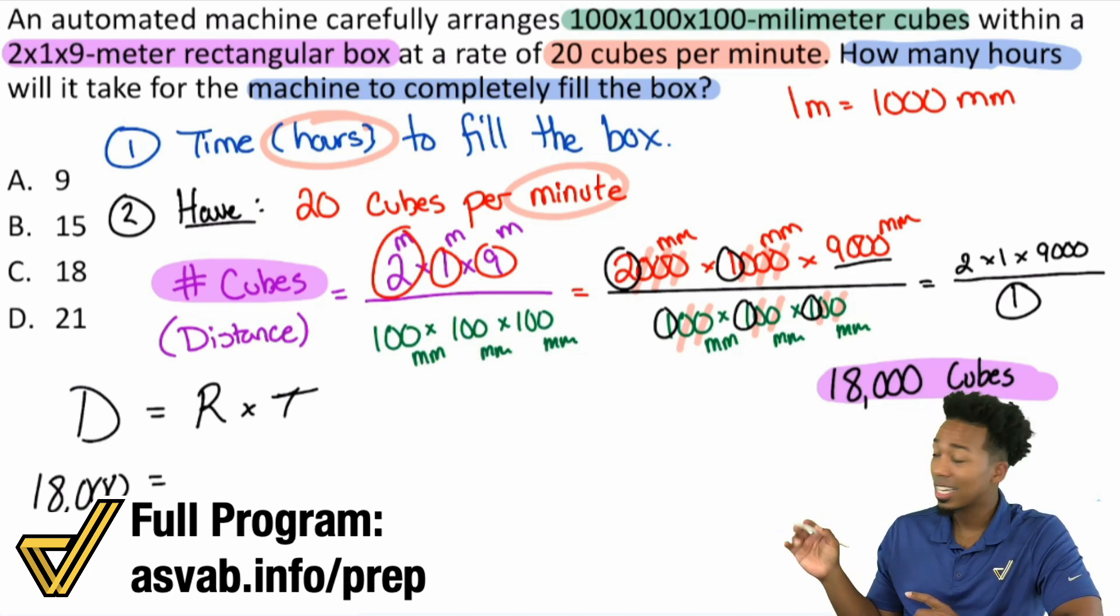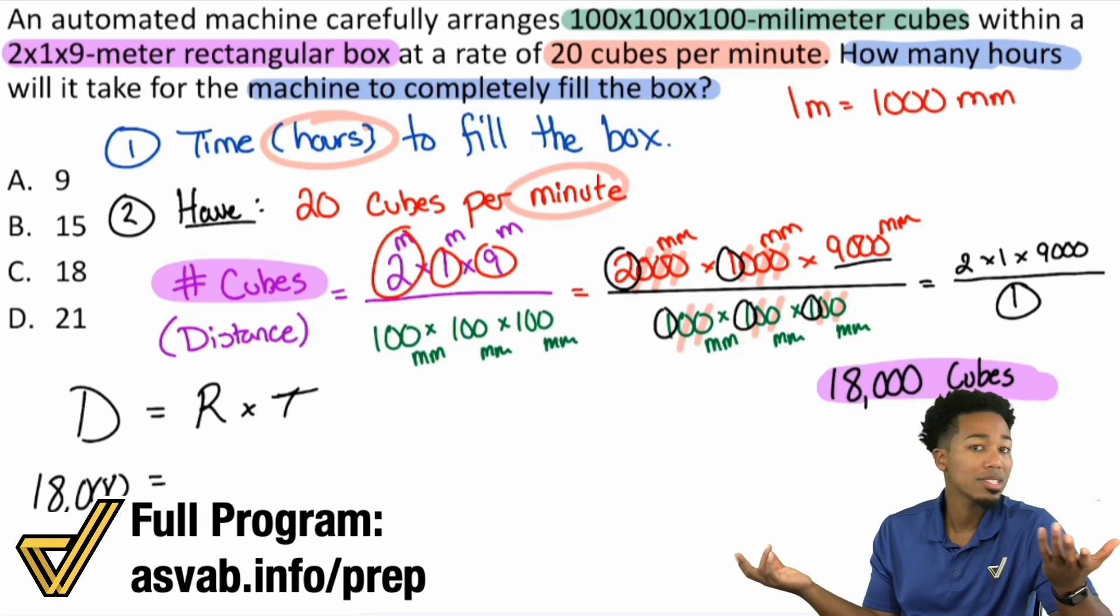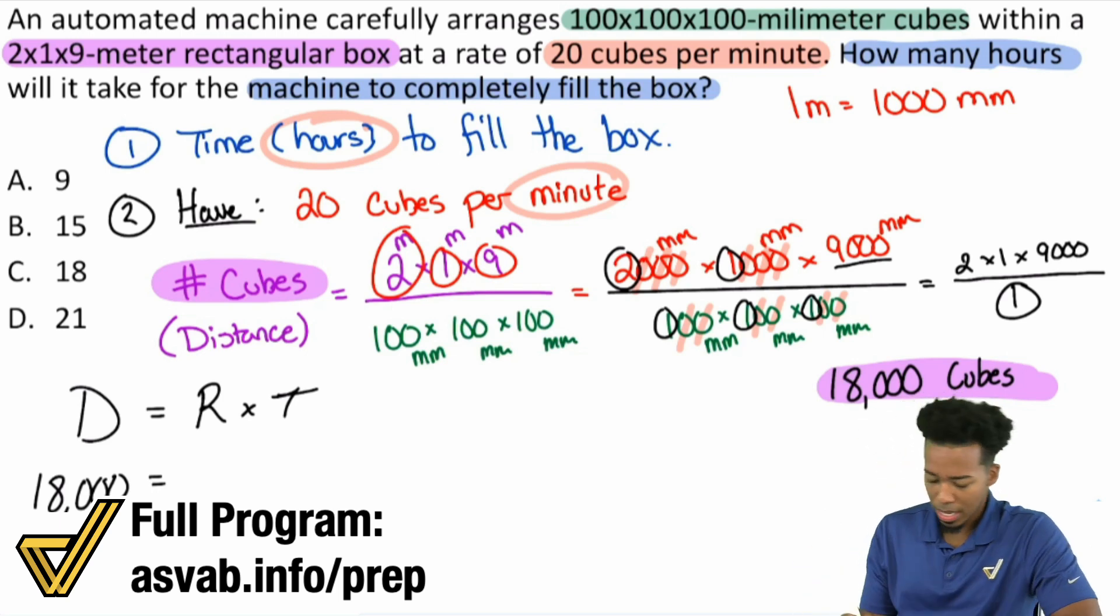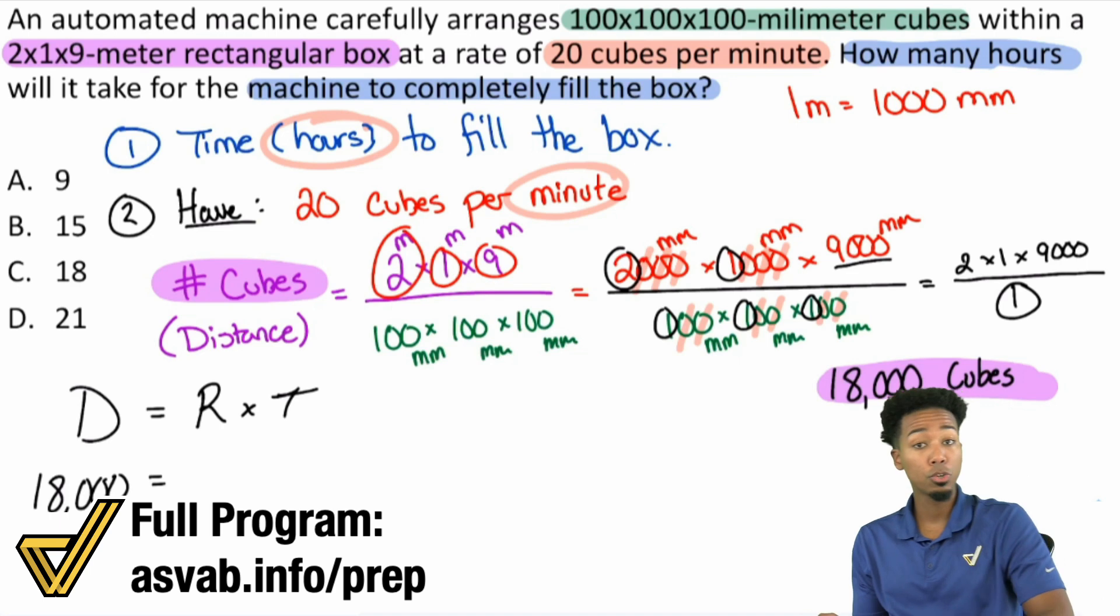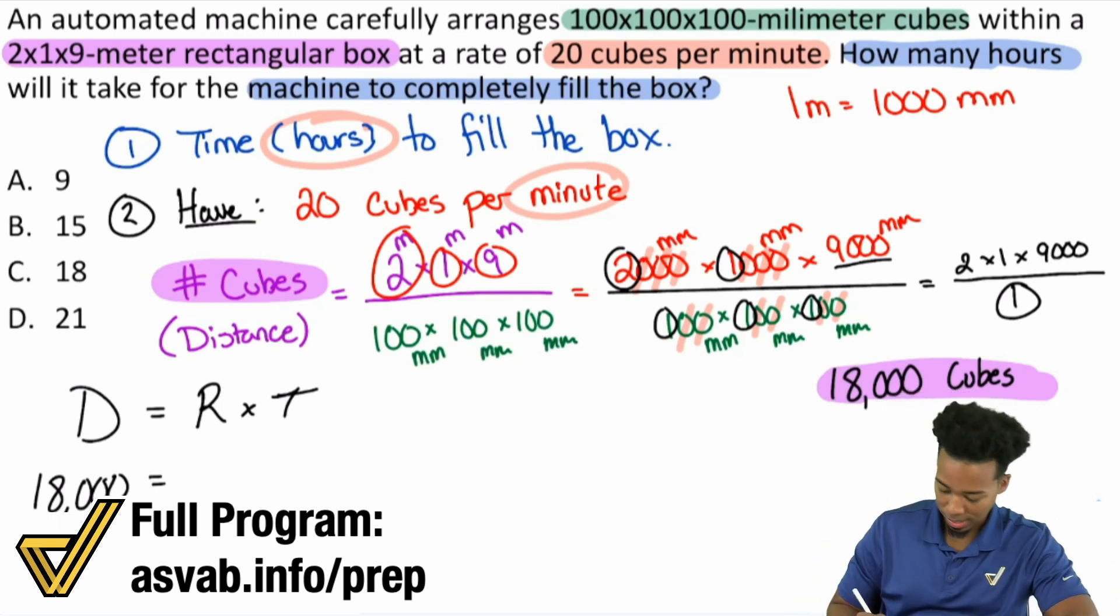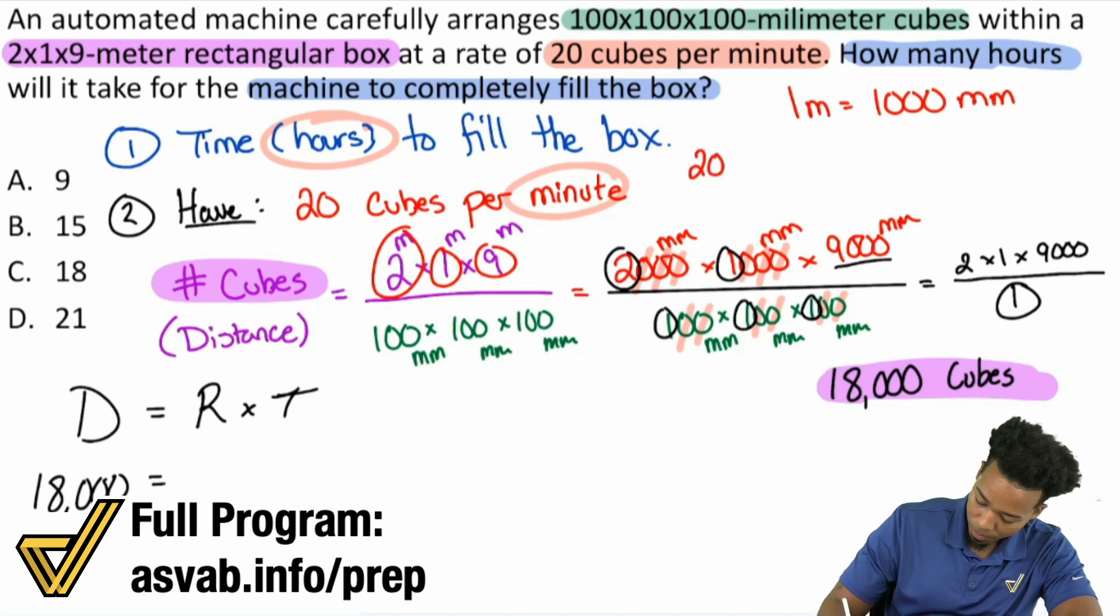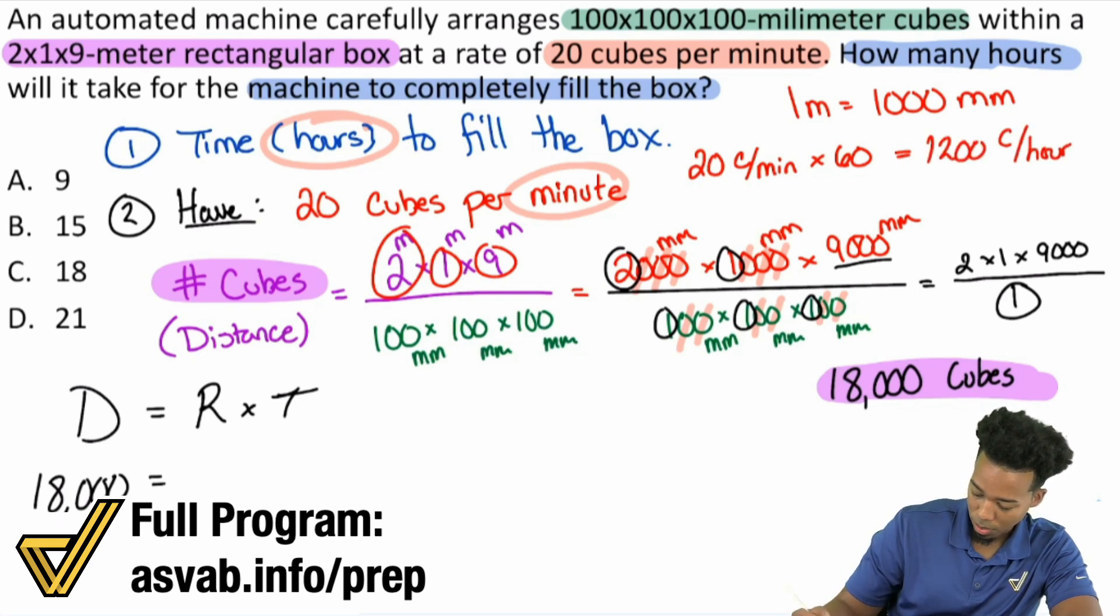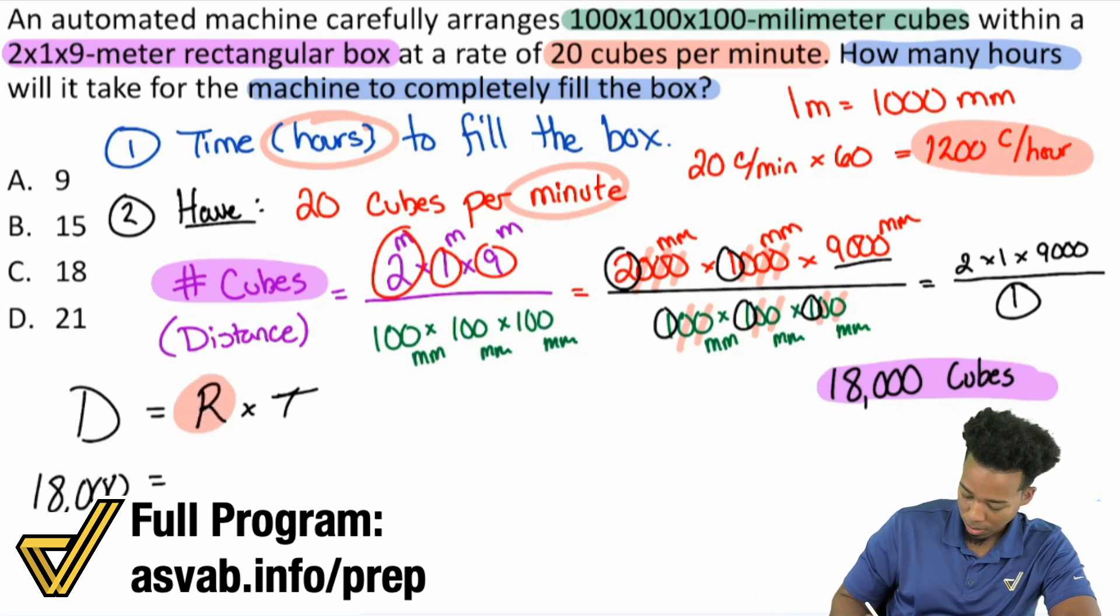Think of it like this: if you have 20 cubes per minute, to get 2 minutes, you multiply by 2. To get 10 minutes, multiply by 10. To get how many cubes you would get in an hour, you multiply by 60, because one hour is 60 minutes. Let's go from 20 cubes in one minute to how many cubes in one hour by multiplying by 60. 20 cubes per minute times 60 equals 1,200 cubes per hour. That is the true rate we're going to use.